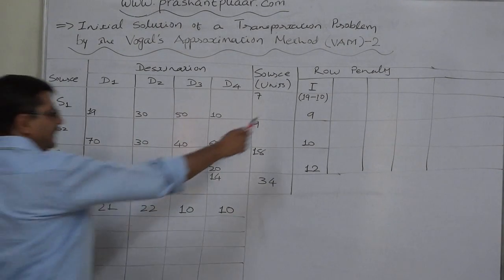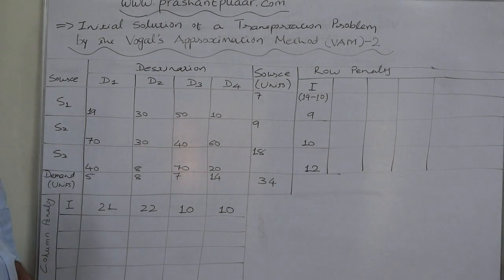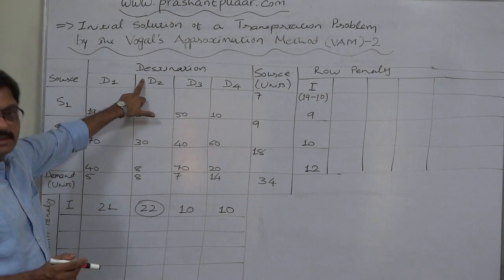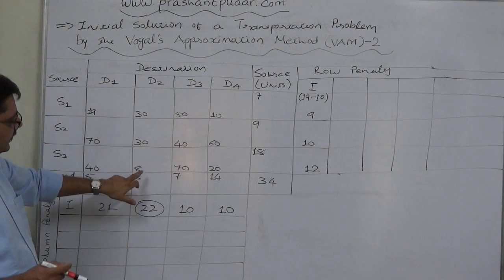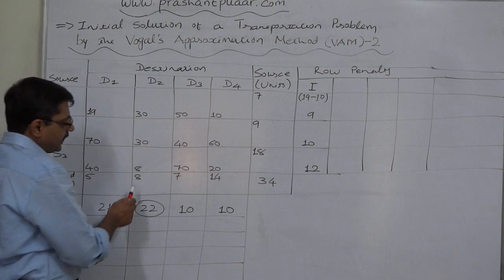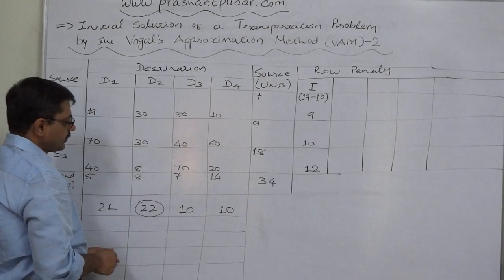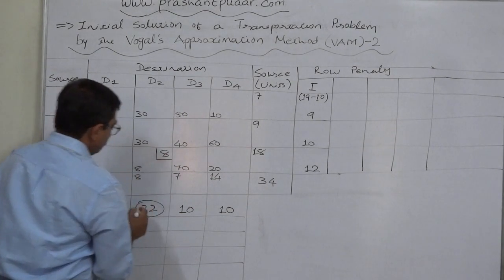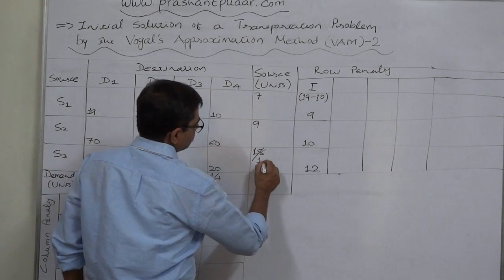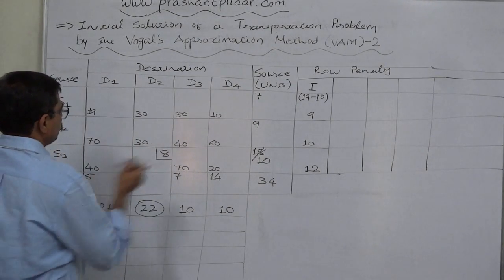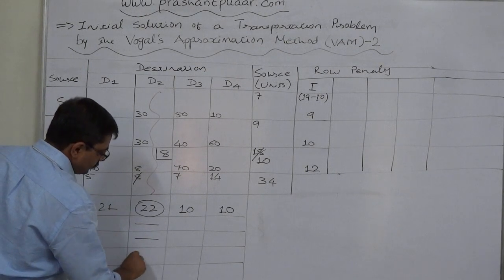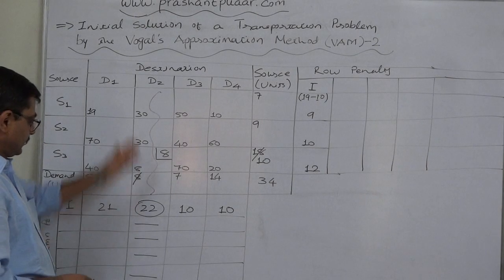Comparing all penalties of rows and columns, the highest is 22, which belongs to column D2. So we select column D2. In D2, the cell with the lowest cost is S3D2 with a cost of 8. We allocate the lower of demand (8) or supply (18), which is 8 units. The demand of D2 is satisfied; remaining supply of S3 is 10. We cancel column D2 and will not consider it in future steps.